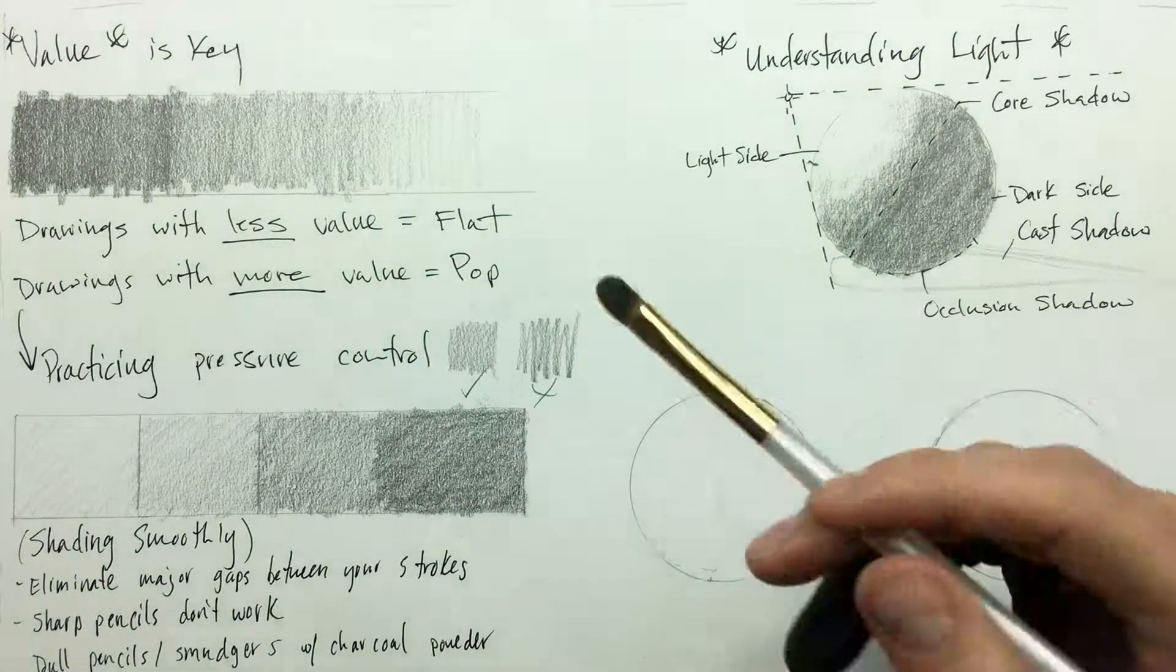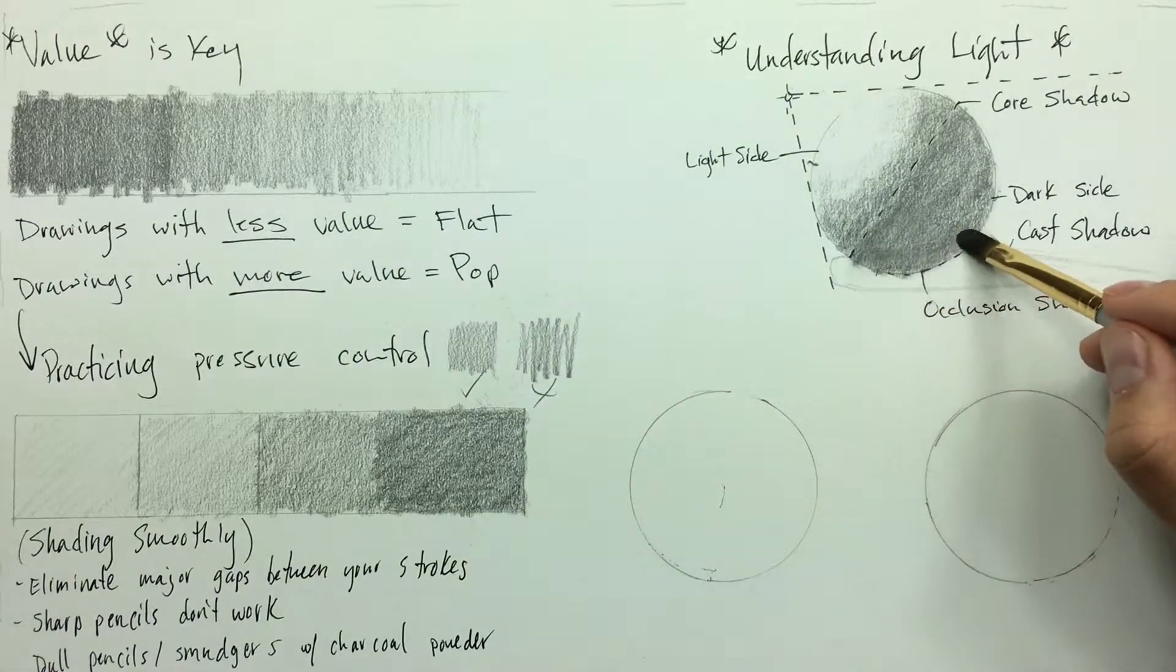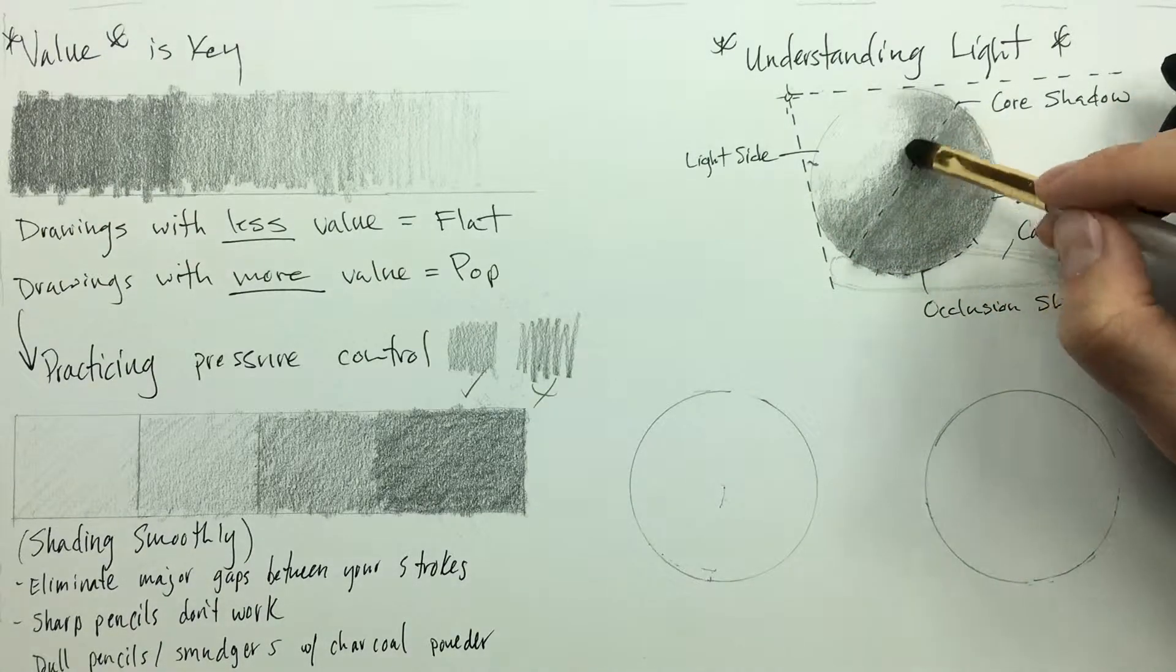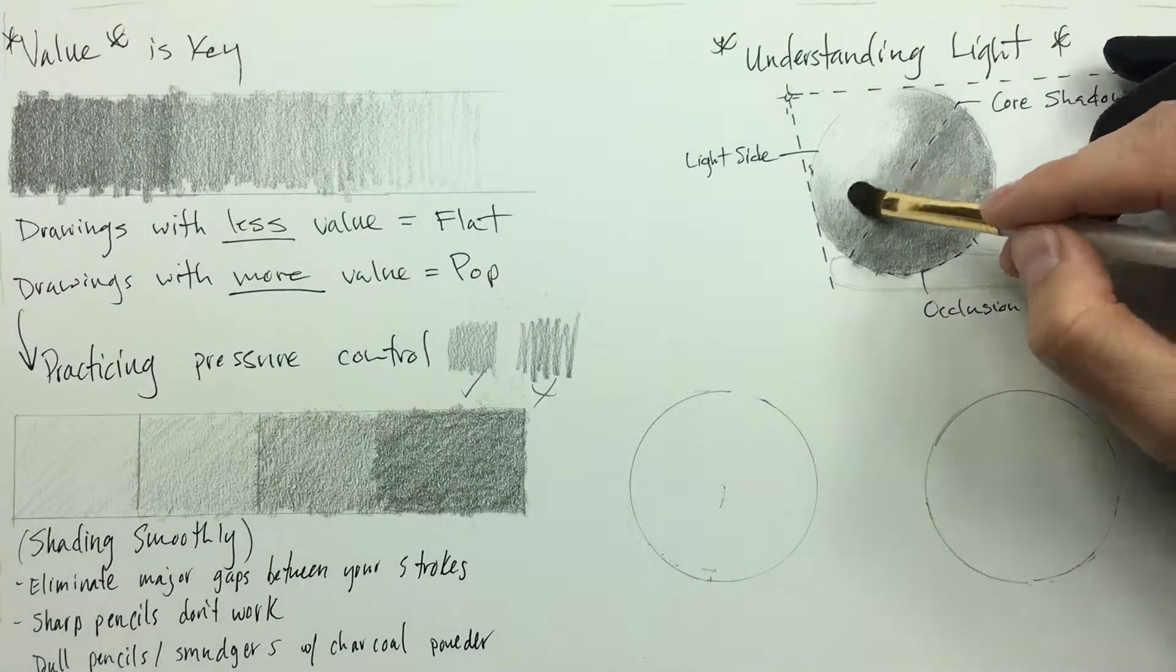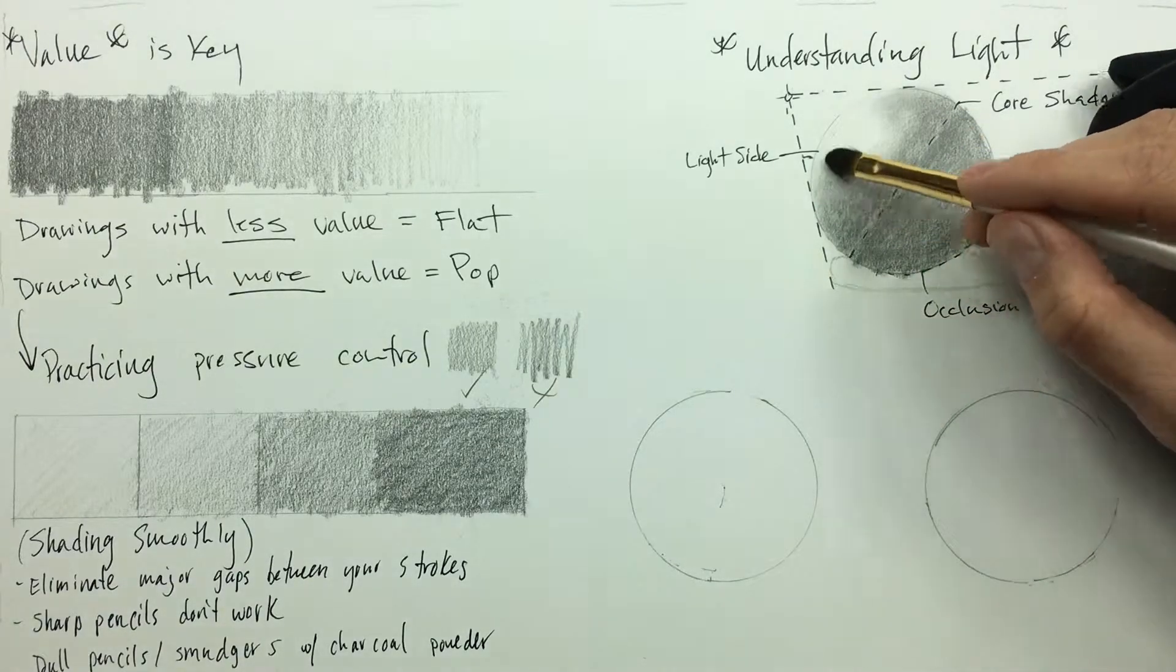Then what we're going to do is take our brush here—this is one of my favorite tools—and we're going to soften up all of the graphite that we just laid down. This is going to help cement that three-dimensional form that we want.